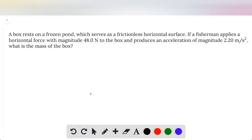Okay, so what we have here is a very standard Newton's second law problem. We have a box on a frozen pond, and a fisherman is applying a horizontal force. We'll go ahead and draw that with a blue arrow, and that is being indicated by this vector right here.